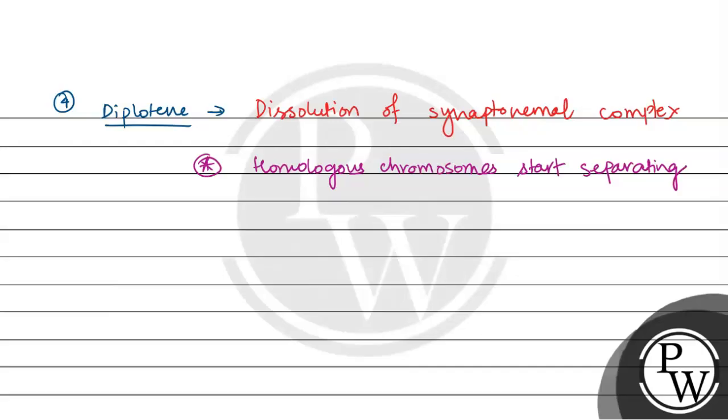But they remain connected at a particular site called the chiasmata. Chiasmata is basically the sites of crossing over. Where there is crossing over, they remain connected.